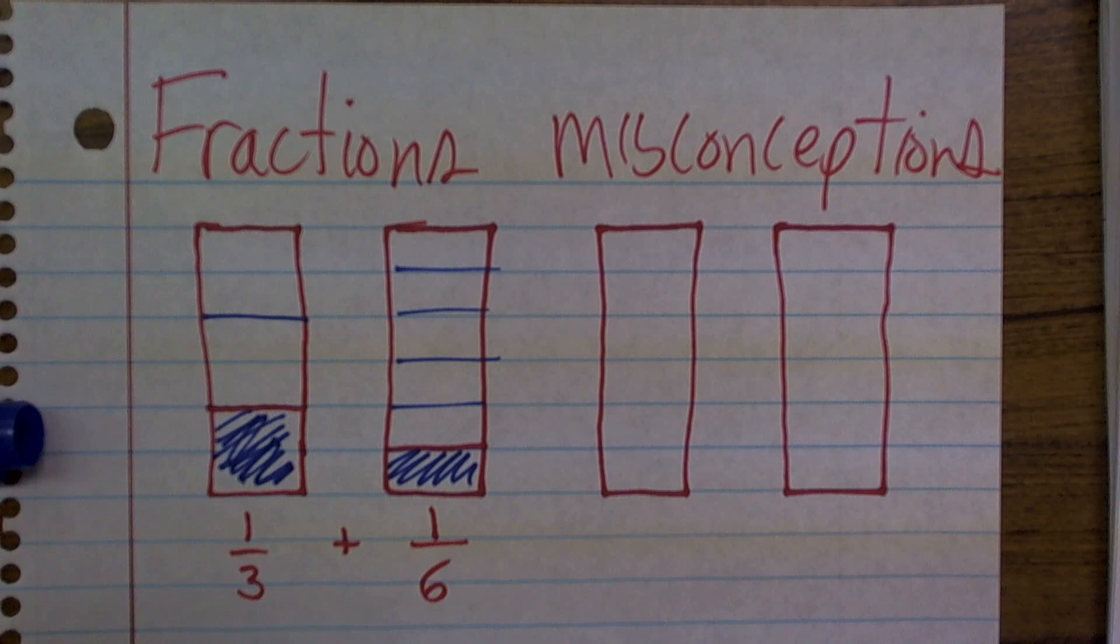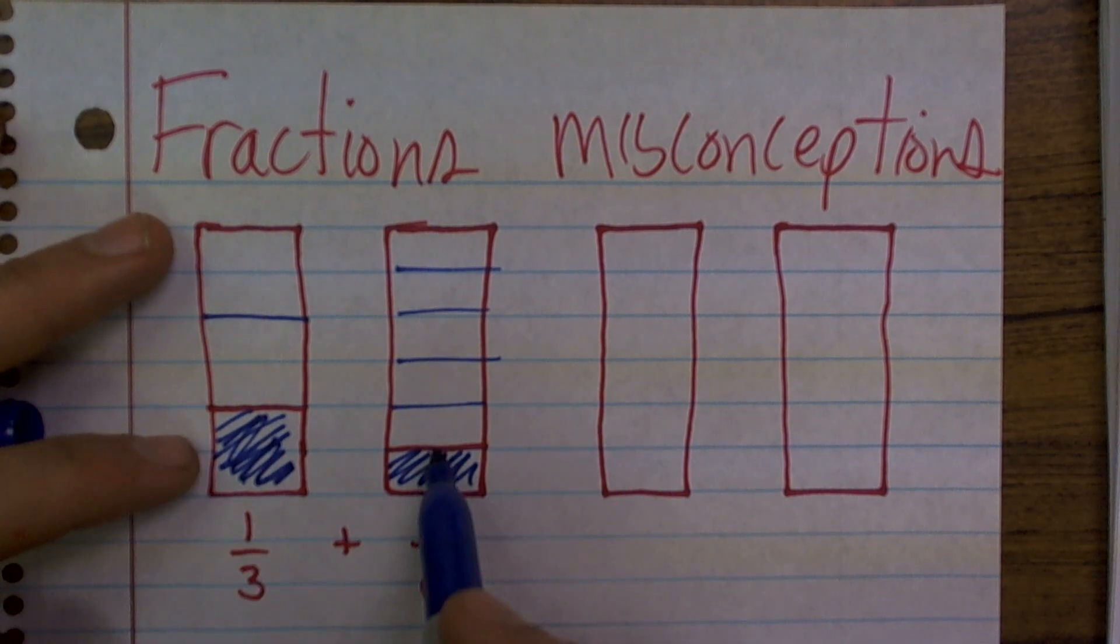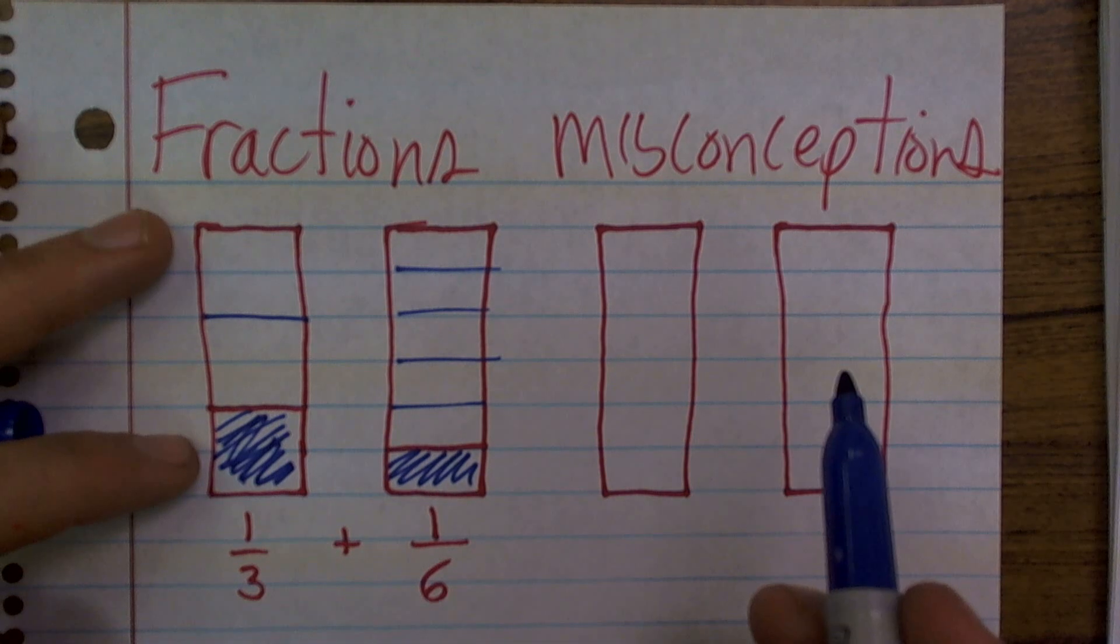Now what a lot of students will do is there's kind of two misconceptions. One thing is they'll say, oh, well, 1 plus 1, obviously it's going to be 2, right?